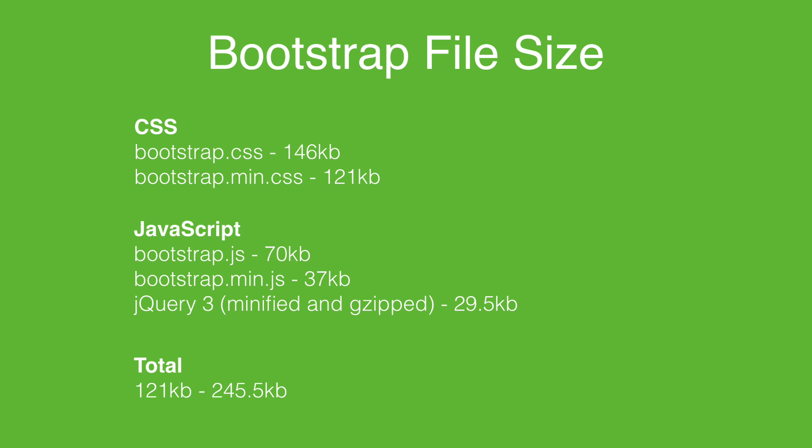A common complaint about Bootstrap is that it's bloated — it makes your CSS file way too big and the framework contains a lot of UI components that you'll never use. So let's take a look at just how bloated Bootstrap really is. If we look at the CSS, an unminified version is 146 KB. When we minify it, it gets a little bit better but it's still 121 KB. That's bigger than I'd want my CSS to be for any project.